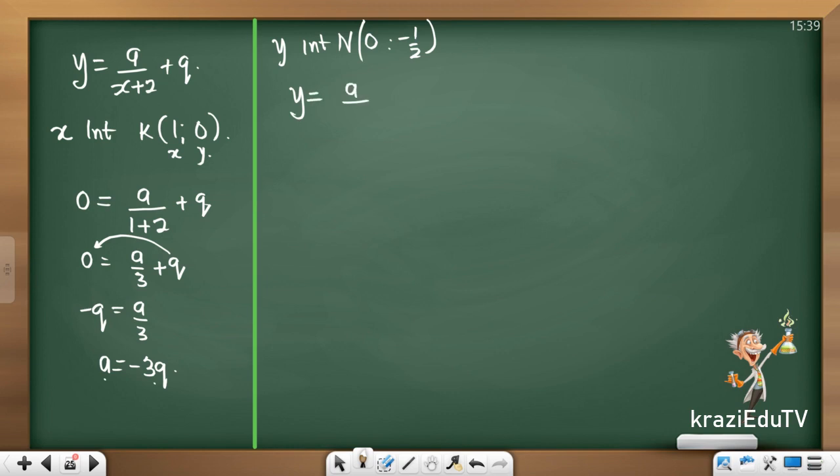So y equals to a over, remember, x plus 2. I think I can just substitute. My x is 0, 0 plus 2. And my y value is negative half. The rest is just algebra. Negative 1 over 2 equals a over 2 plus q. I would multiply everything by the LCD to get rid of my denominator. Negative 1 equals a plus 2q.